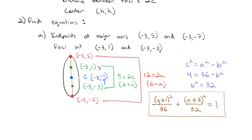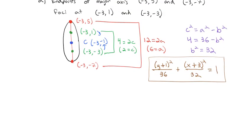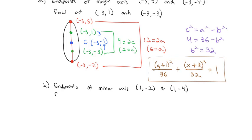Let's do one more ellipse. Find the ellipse with endpoints of the minor axis at (1, −2) and (1, −4), and foci at (−2, −3) and (3, −3). The foci have a consistent y-coordinate, so this is a horizontal ellipse. The center is in the middle of the minor axis endpoints: x-coordinate is 1, and right in the middle of y=−2 and y=−4 is y=−3. So the center is (1, −3).